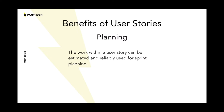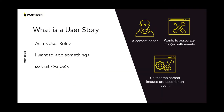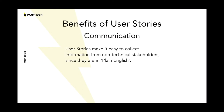There are certain benefits to user stories. One of them is planning — the work within the user story can be estimated and reliably used for sprint planning. Going back to this example about a content editor, we could say this doesn't really have the scope defined. This is actually a really weak example with just these three pieces. But we could refine this, scope it, work with it, get a good estimate, put it in a sprint, and know that work was going to be done.